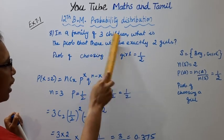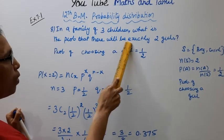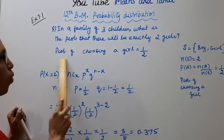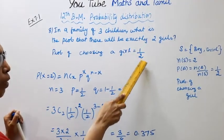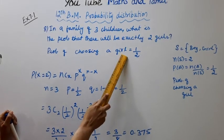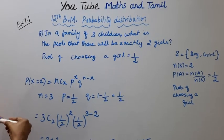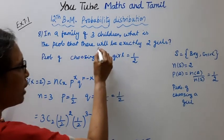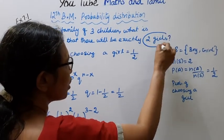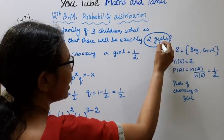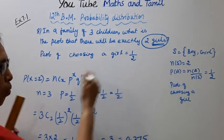Family of 3 children — what is the probability there will be exactly 2 girls? Probability of choosing a girl is 1 by 2. The question is about girls, and the probability of choosing a girl is 1 by 2.